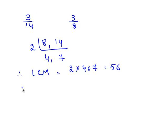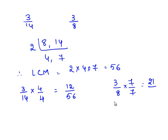Therefore, the equivalent rational number for 3 by 14 is obtained by multiplying the fraction 3 by 14 with 4 on both the numerator and denominator. So we have 3 times 4 is 12 divided by 14 times 4 is 56. Now we obtain an equivalent fraction for 3 by 8 by multiplying this fraction with 7 on both the numerator and denominator. We obtain 3 times 7 is 21 divided by 8 times 7 is 56.